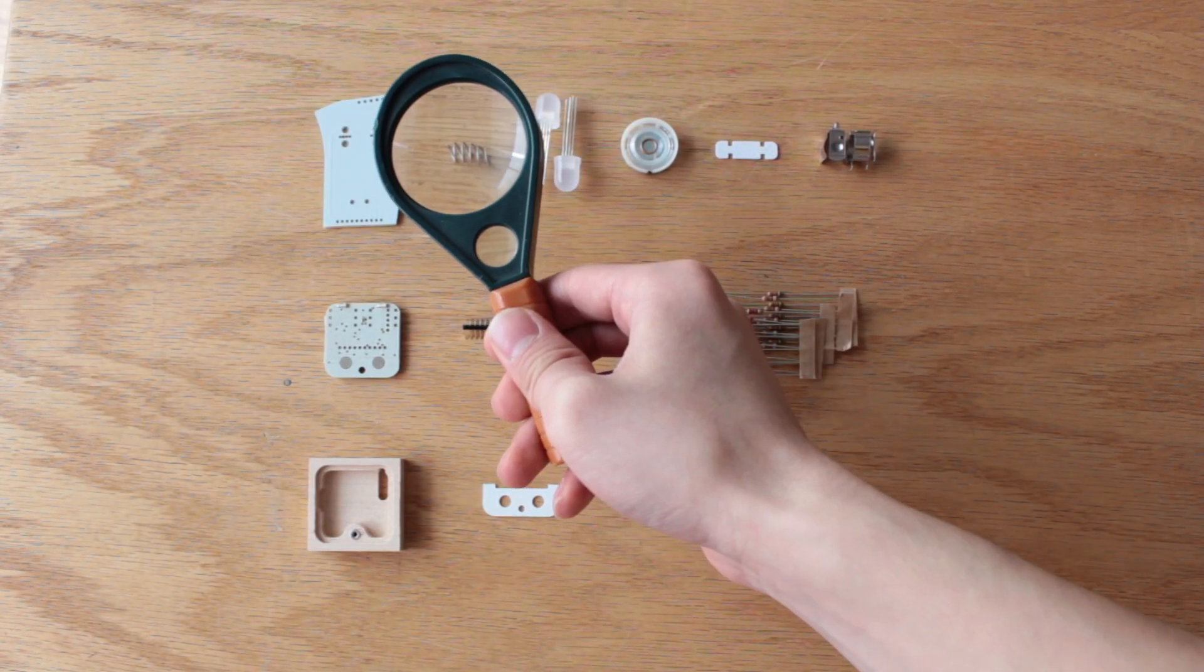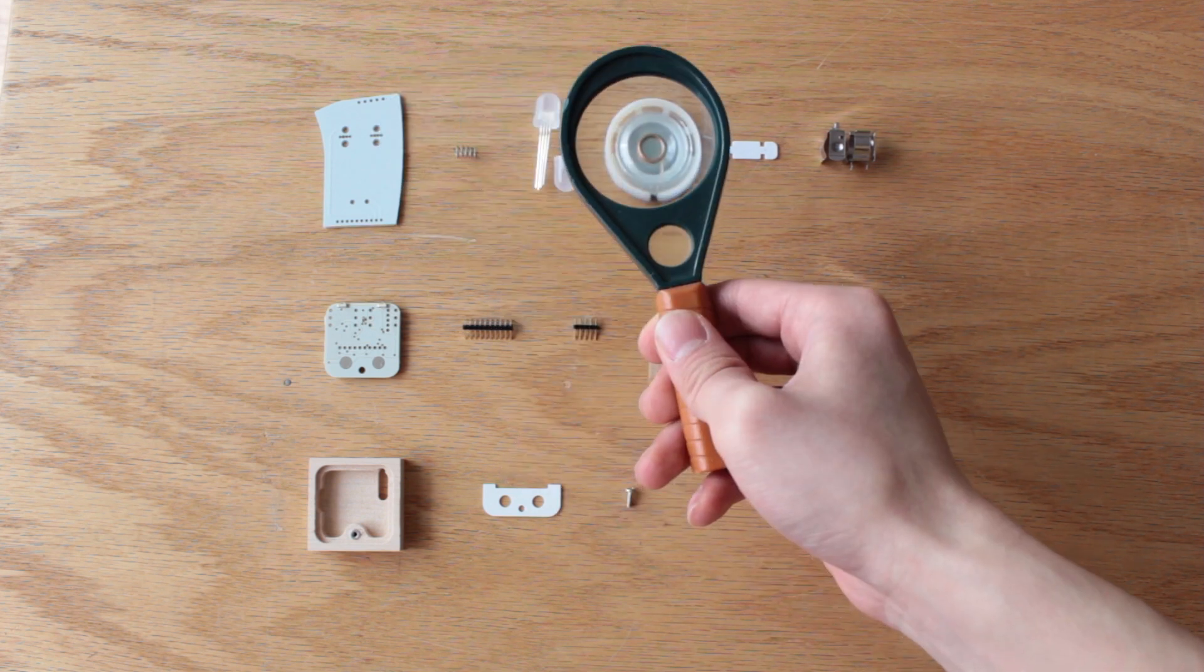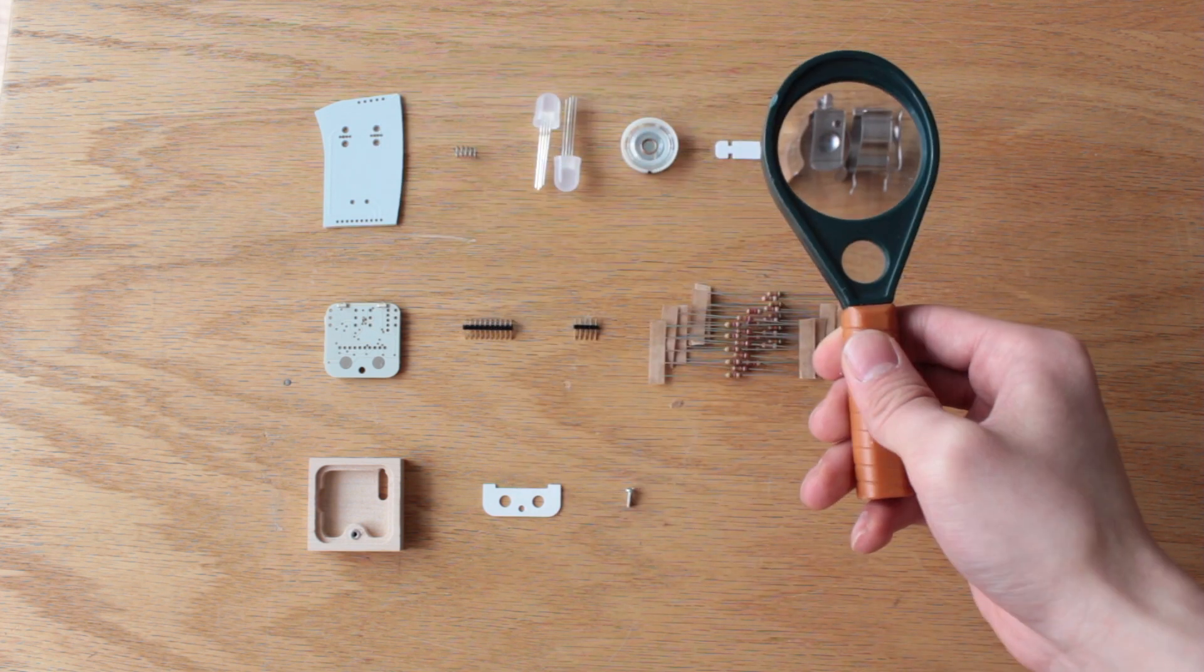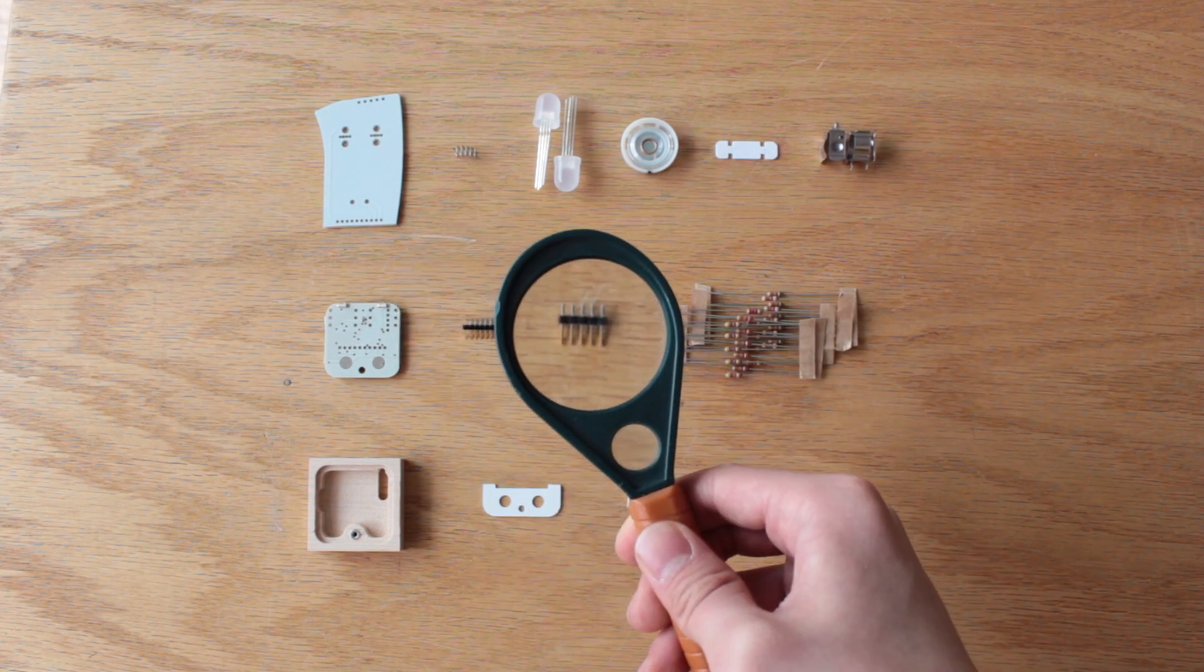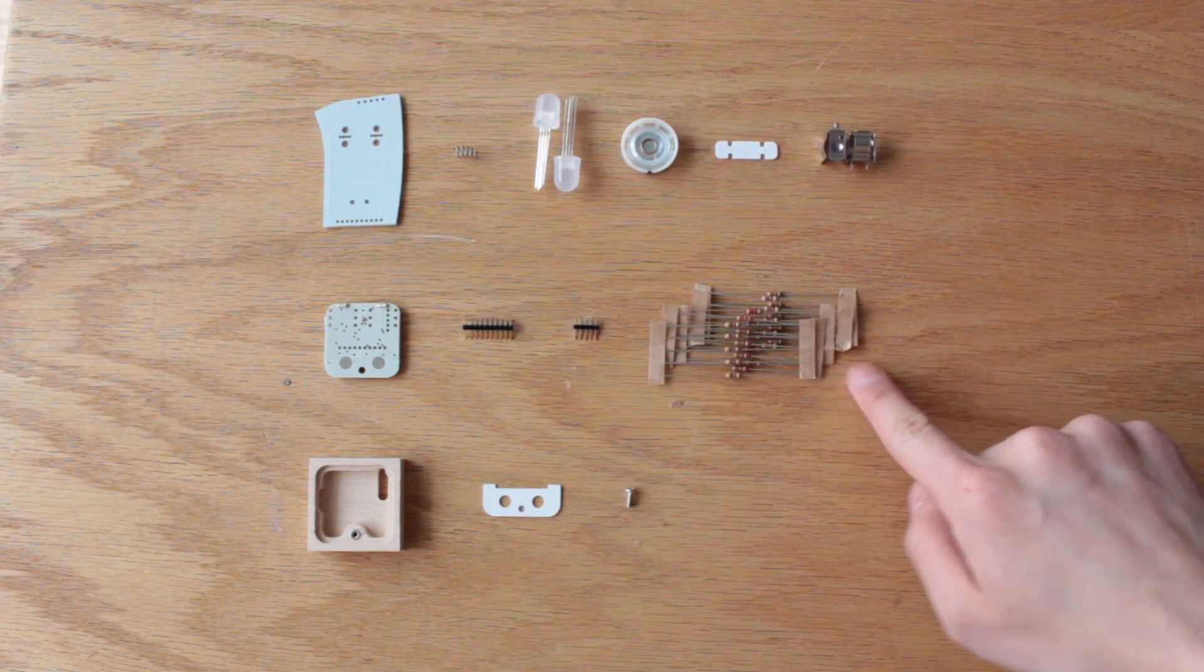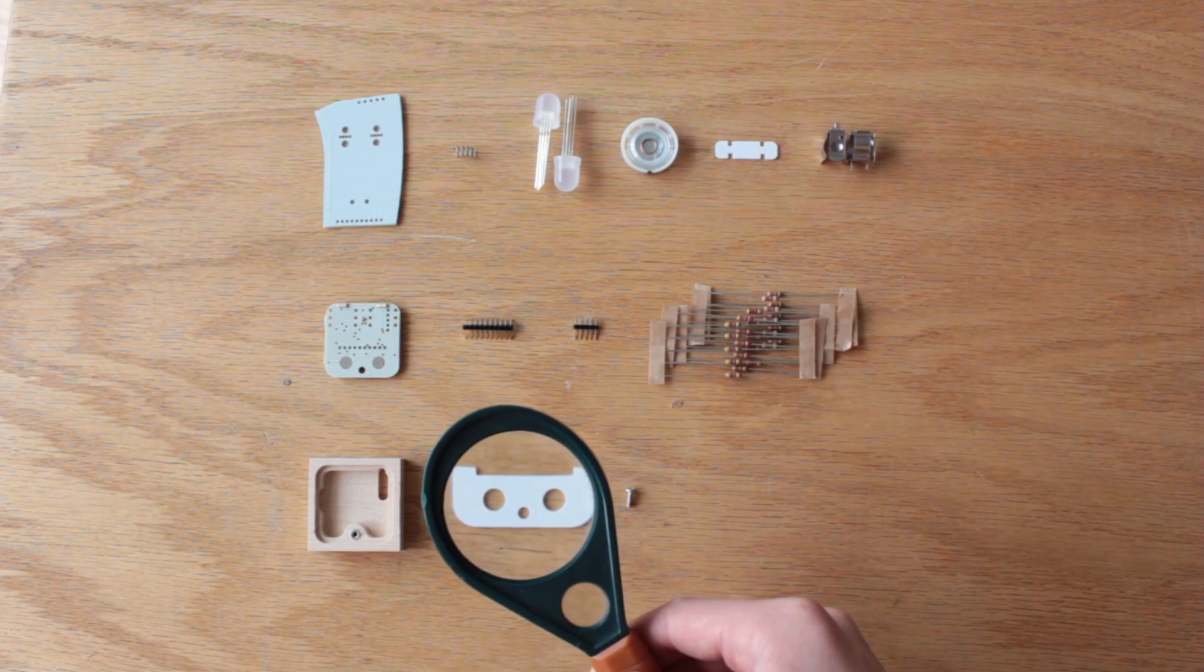One body PCB, one springy hairdo, two LED eyes, a speaker mouth, a plastic body cover, two battery clips, one foot PCB, a 10-pin connector, a 5-pin connector, five kinds of resistors, 30 in total, a base, a plastic foot cover, and a screw.